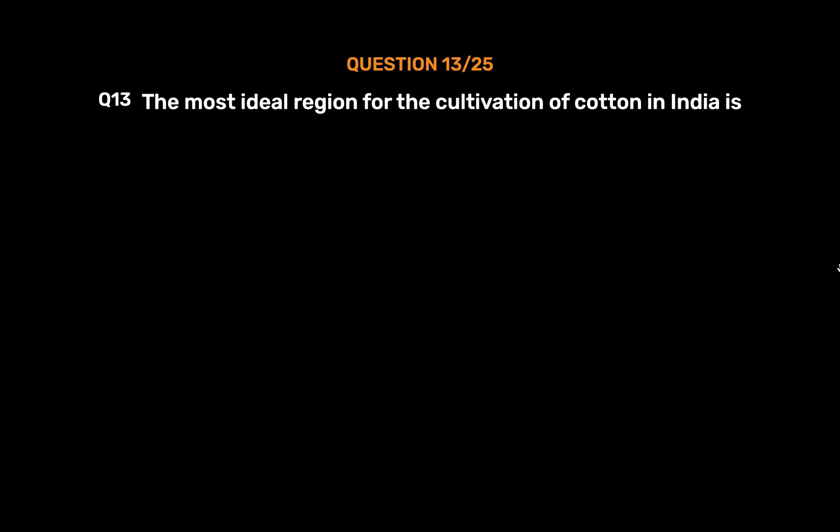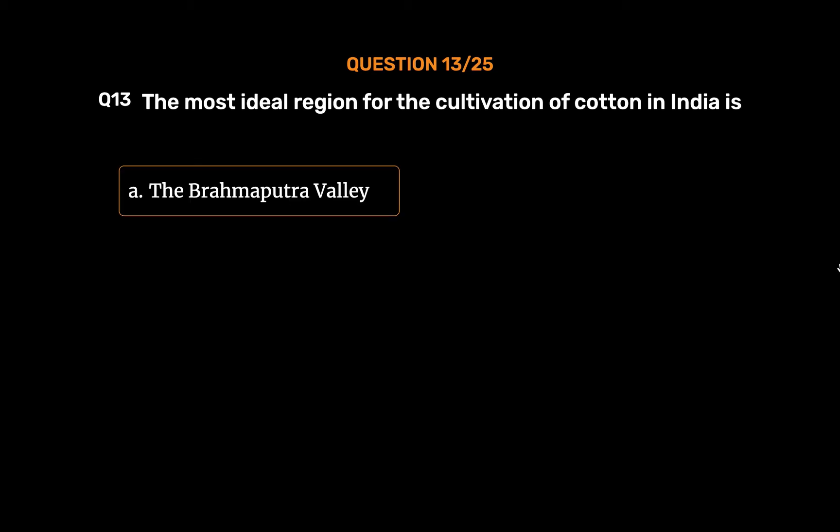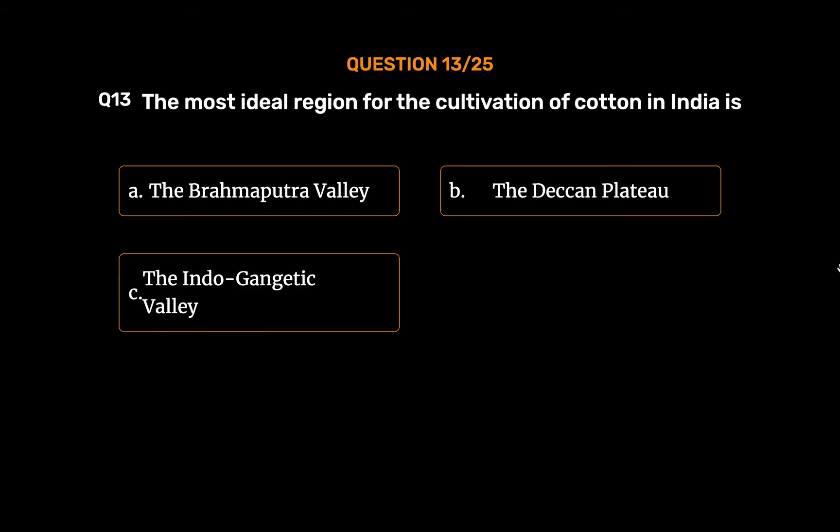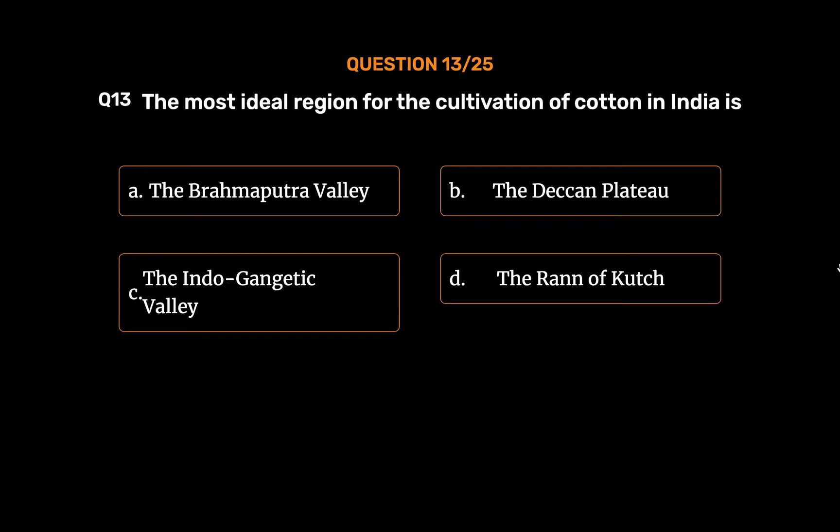Question No. 13. The most ideal region for the cultivation of cotton in India is: Option A: The Brahmaputra Valley. Option B: The Deccan Plateau. Option C: The Indo-Gangetic Valley. Option D: The Rann of Kutch.